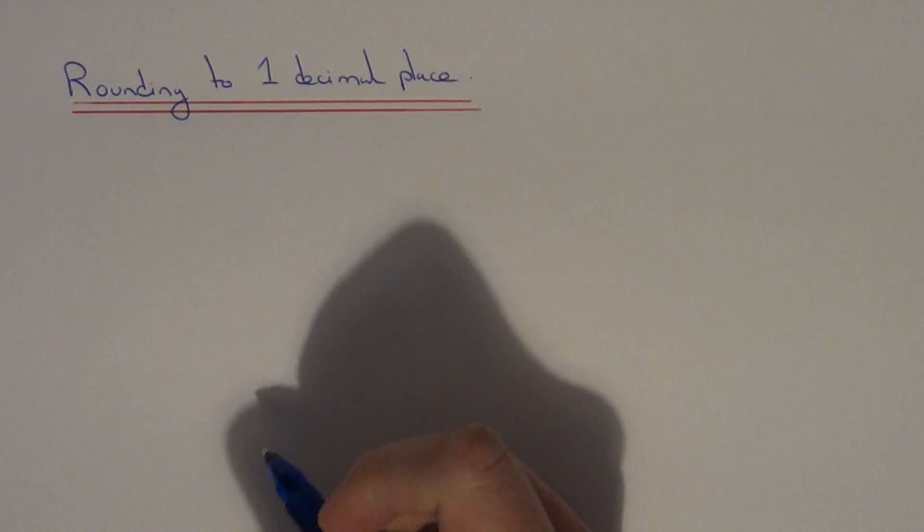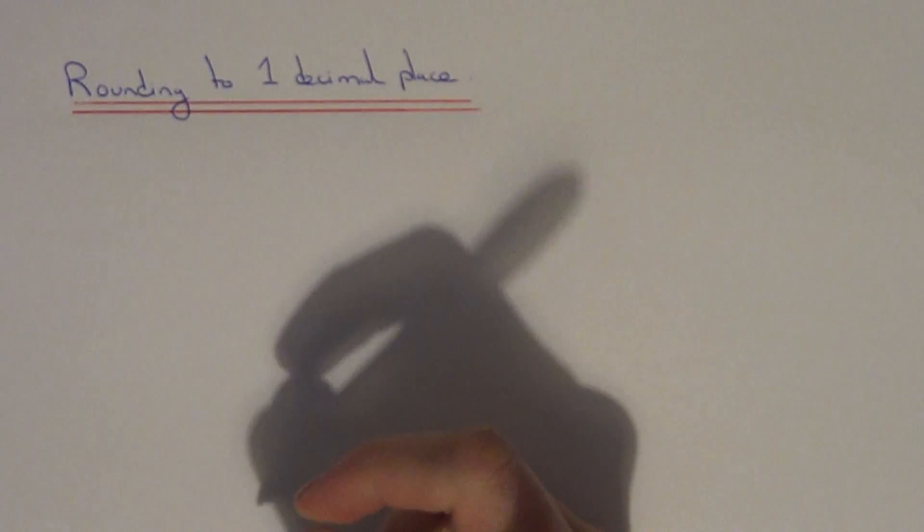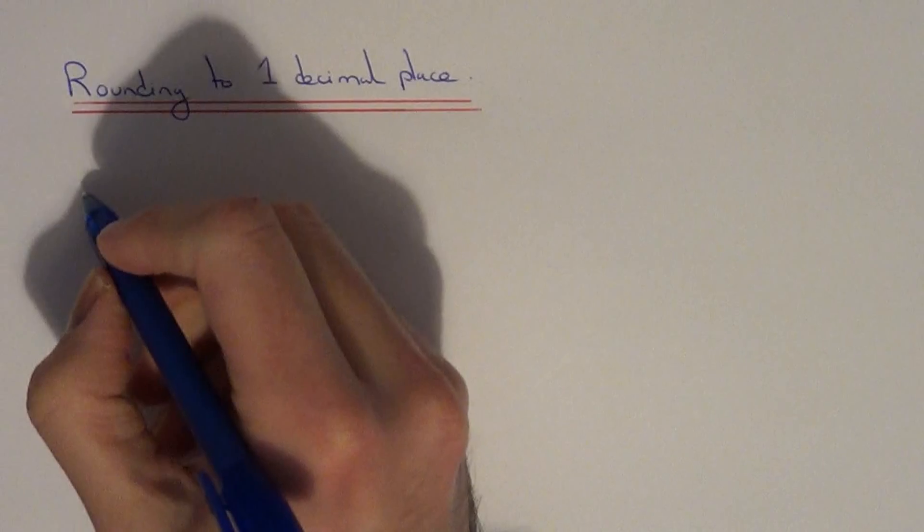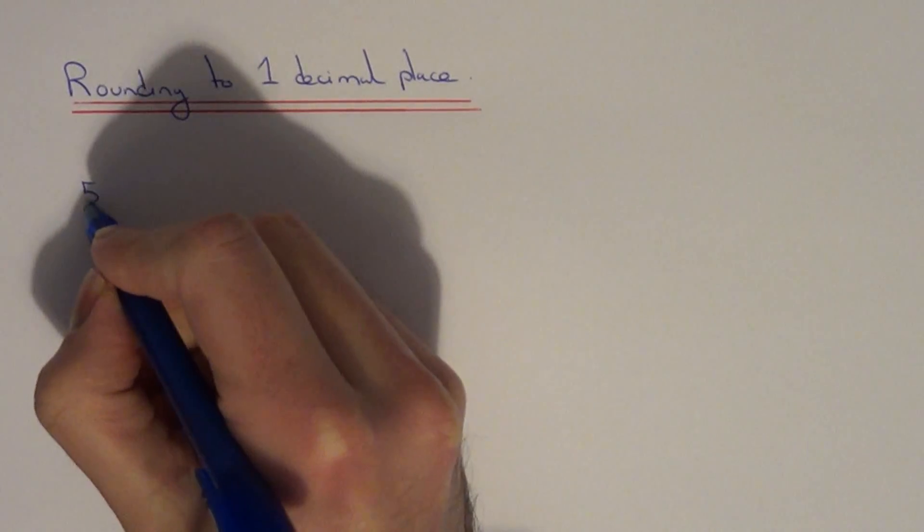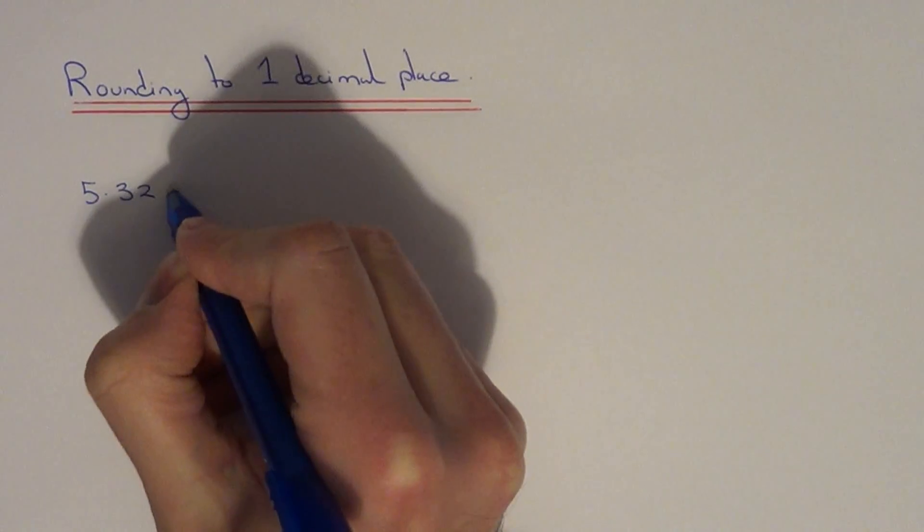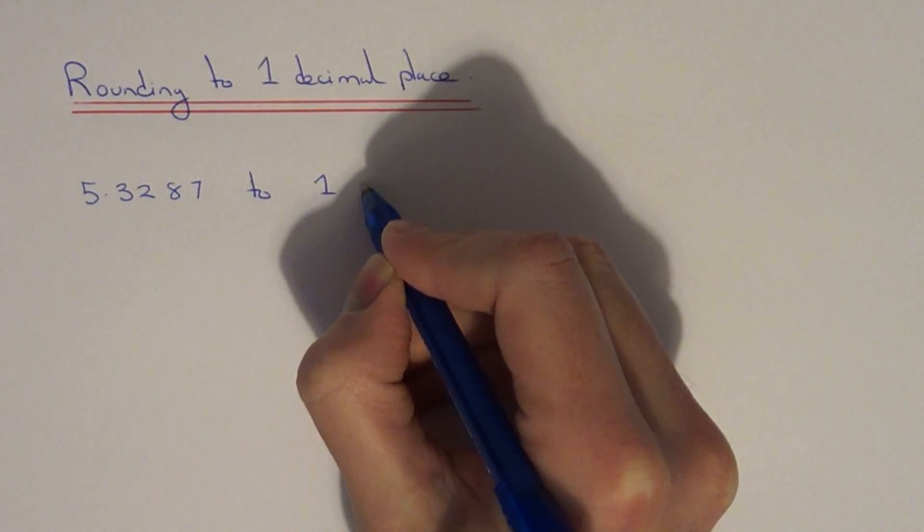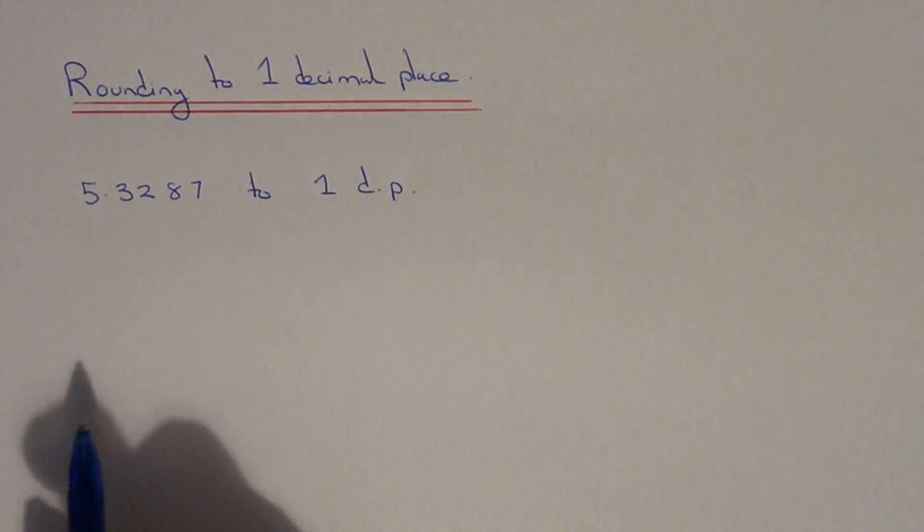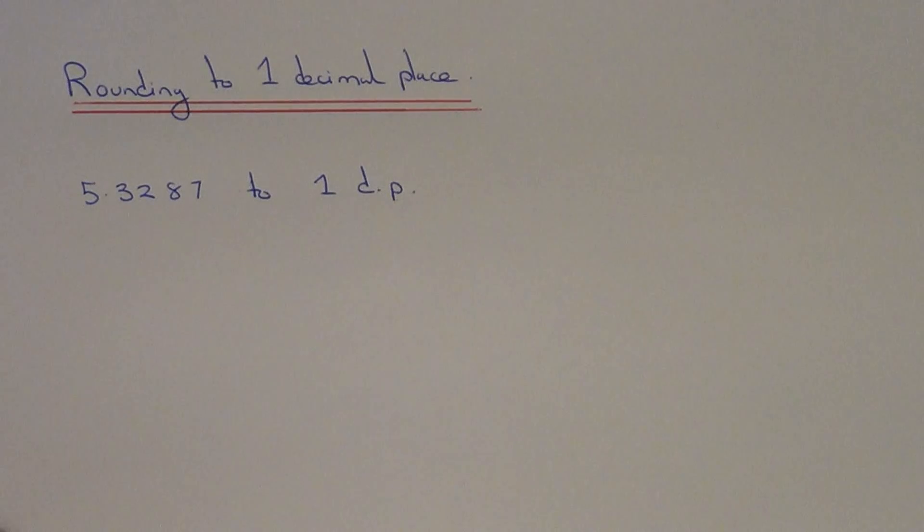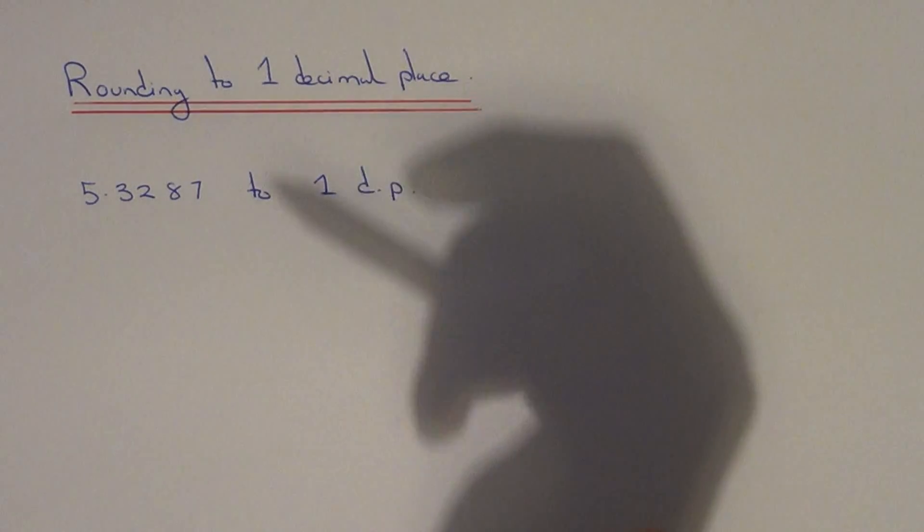Today I want to show you how to round any number off to one decimal place. Let's round 5.3287 to one decimal place. Rounding to one decimal place basically means we need one number after the decimal point.